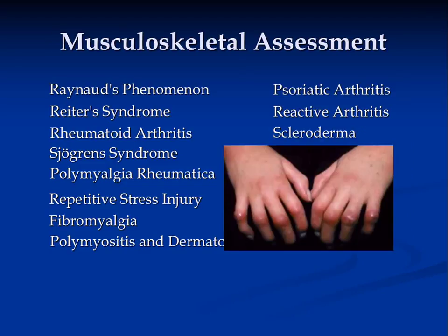Scleroderma is a connective tissue disease that involves changes in the skin, blood vessels, muscles, and internal organs. It is a type of autoimmune disorder — a condition that occurs when the immune system attacks one's body tissues — and the cause of scleroderma is unknown. Individuals with this condition have a buildup of collagen in the skin and internal organs. This buildup leads to symptoms of the disease and usually affects those 30 to 50 years of age. Women get scleroderma more often than men. Widespread scleroderma can occur with other autoimmune diseases, including systemic lupus erythematosus and polymyositis. In such cases, the disorder is referred to as mixed connective disease.